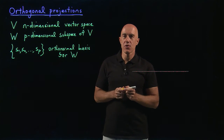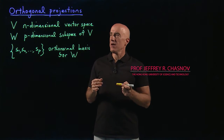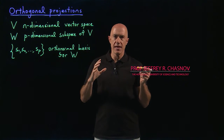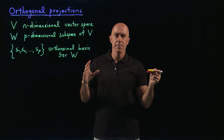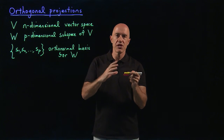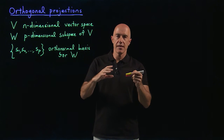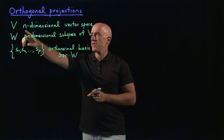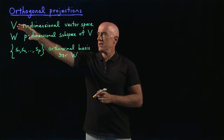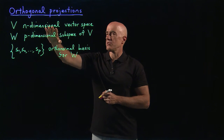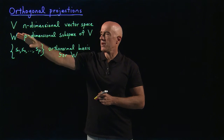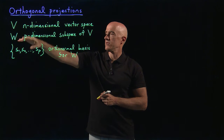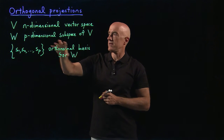In this video, I want to talk about the concept of orthogonal projections. The idea being that we have a vector in a big vector space, and we want to project that vector down into a subspace of that original vector space. So let's start with the big vector space. Capital V is assumed to be an n-dimensional vector space, and capital W is a p-dimensional subspace of big V.